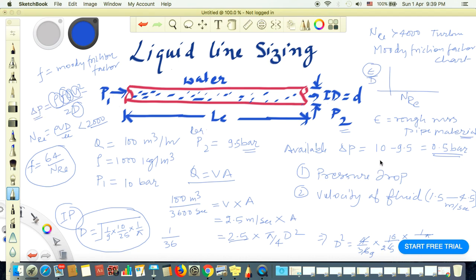Once we got the friction factor, we calculate delta P. If our delta P is less than 0.5 bar, which is allowable, that means our selected size is okay. If the calculated delta P is coming more than 0.5 bar, we have to increase the pipe size. Let's say we're getting 0.75 inches, then we'll take the next size, 1 inch, and repeat the calculation till our delta P is less than the allowable delta P.